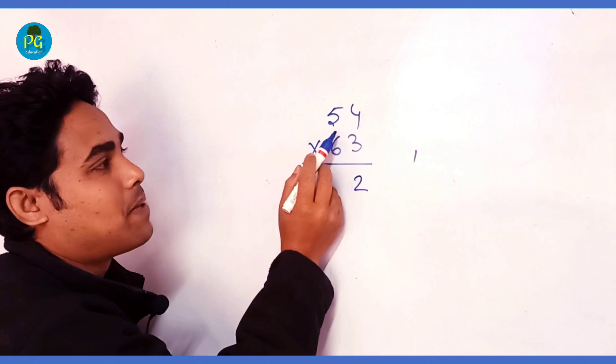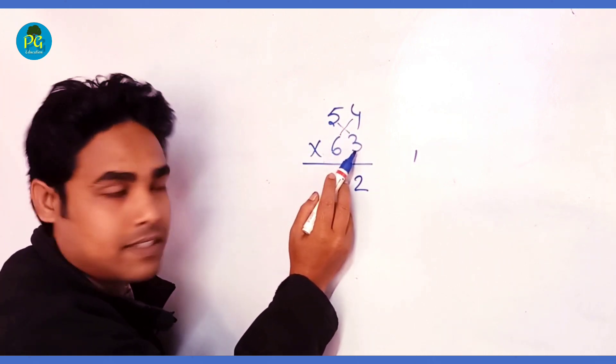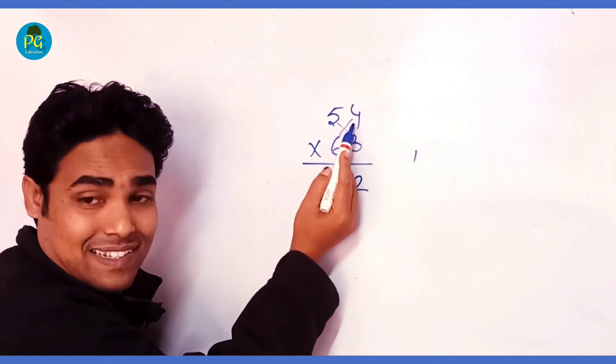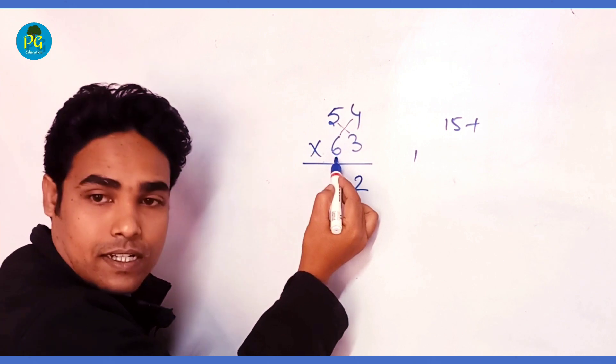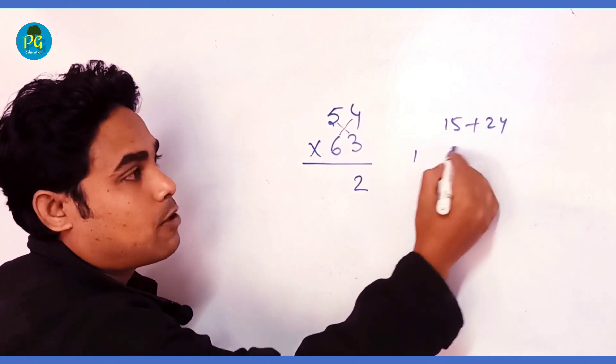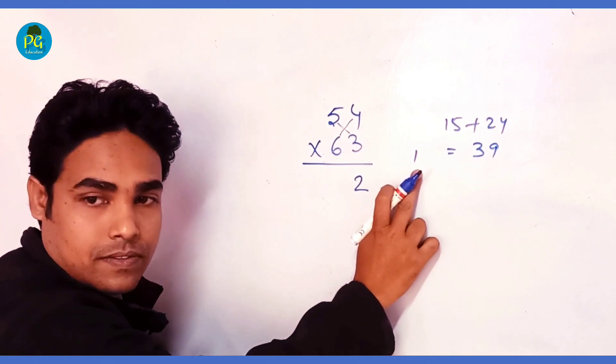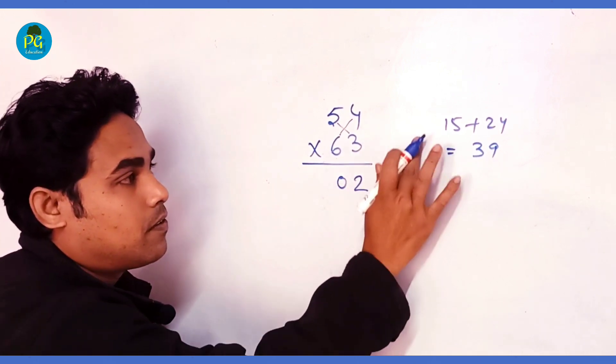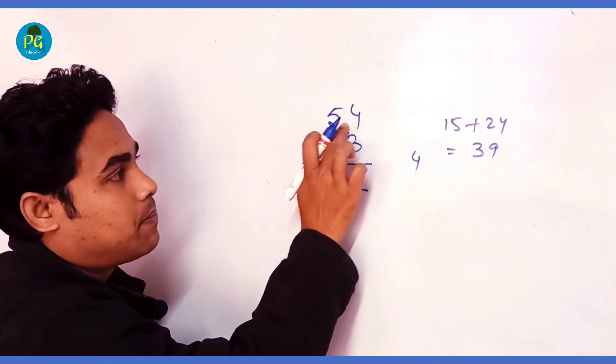Now we will multiply this two-digit and this two-digit. So 5 times 3 is 15, write it down. 15 plus 6 times 4 is 24, so it is how much? 39. 39 plus 1 is 40. Write 0, now 4 in hand.